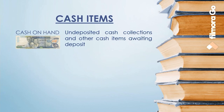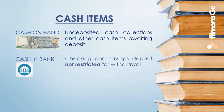Cash in bank includes a checking account — also called demand deposit — and savings deposits which are unrestricted for withdrawal. In some cases where a minimum balance is required to be maintained, usually in connection with a borrowing arrangement with the bank, the first question to ask is: is it legally restricted as to withdrawal? If yes, the next question is: is the restriction less than a year? If yes, it is presented as restricted cash under current assets; otherwise, it is reported as a non-current asset. If there is no restriction, it is included in cash as a current asset.